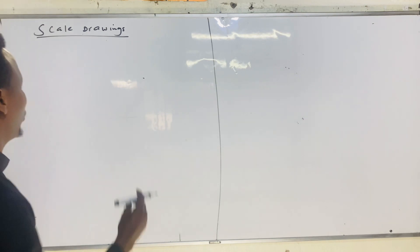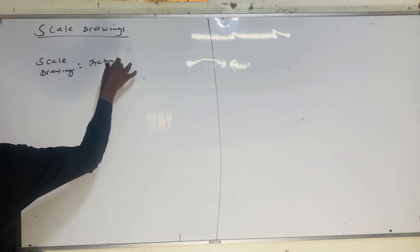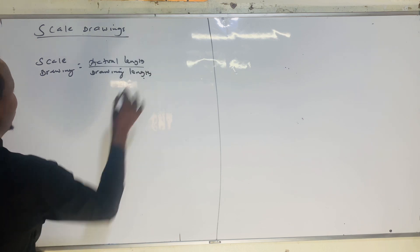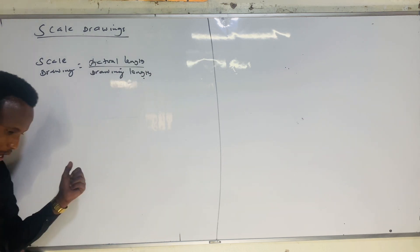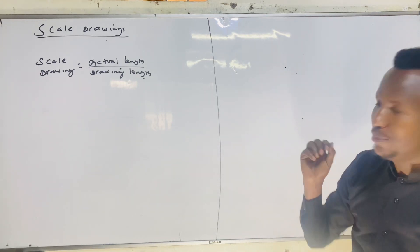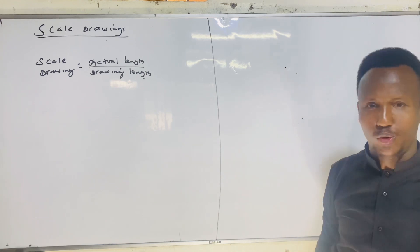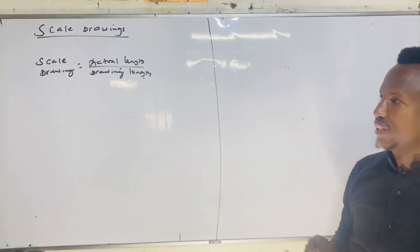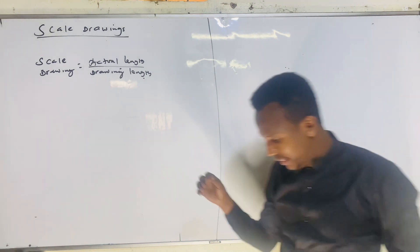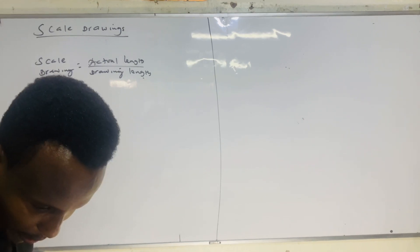In skill drill, there are three possible questions. The skill drill formula is: scale equals actual length divided by drawing length. In the examination you need to know this. Sometimes you can be asked to find the actual length or the drawing length. Now let's see the first example, then we'll move to how to get actual length.